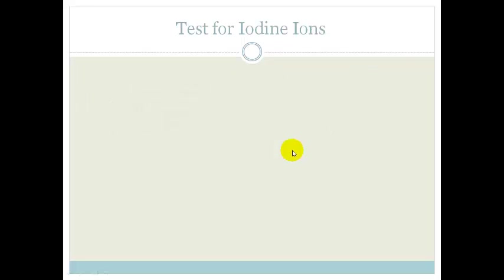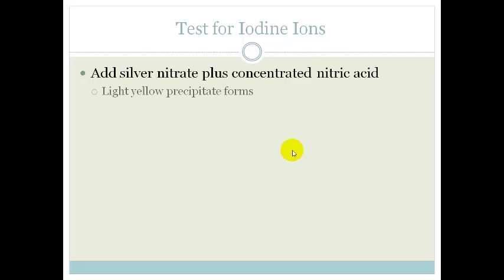And finally, we test for iodide ions. We add the silver nitrate plus concentrated nitric acid. This time it's going to form a light yellow precipitate. The reaction is iodide ion plus silver plus nitrate gives you silver iodide plus your nitrate. And again, your solid precipitate.